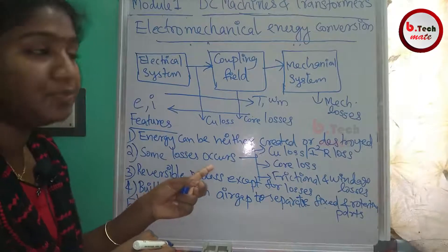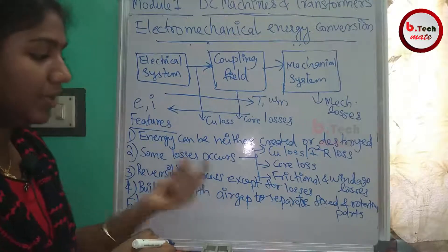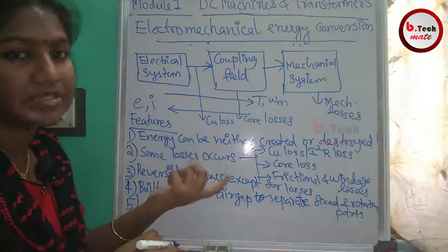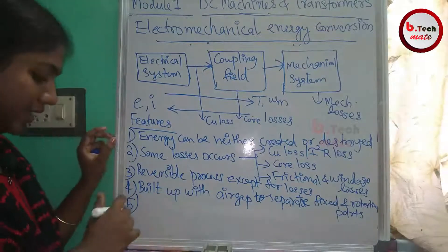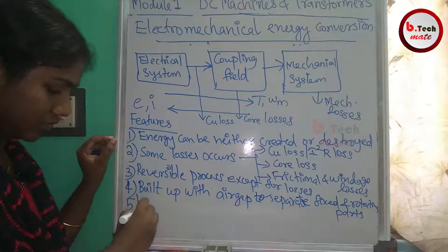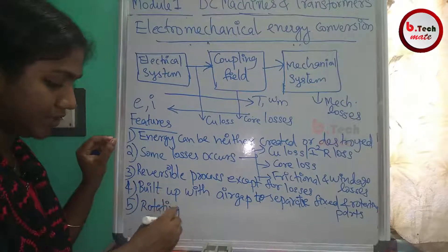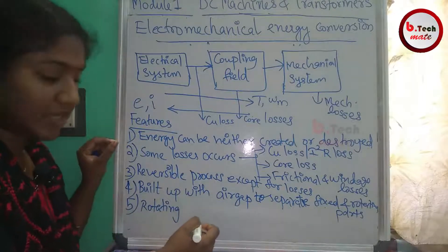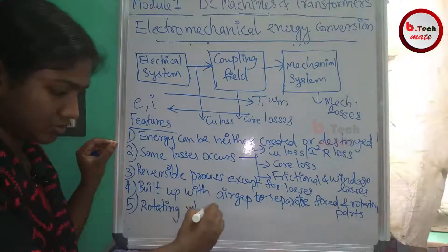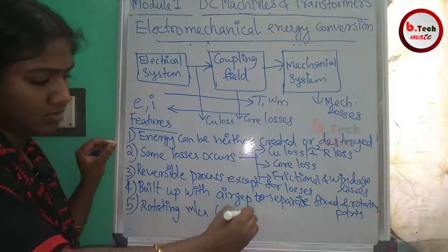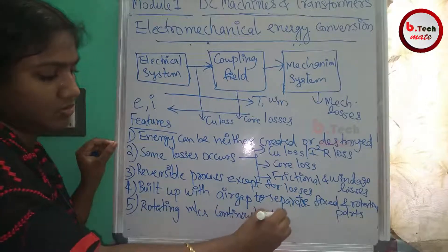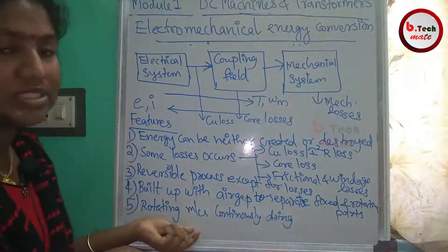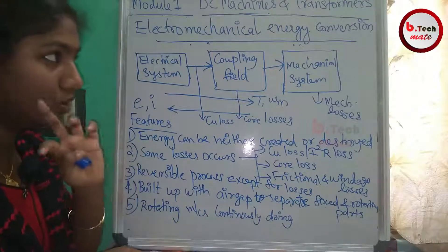After losses, we have a temperature increase — heat is produced. The last feature is that rotating machines continuously convert electromechanical energy. Electromechanical energy conversion takes place continuously in rotating machines; it is a continuous process.